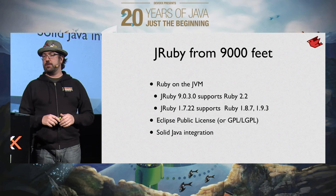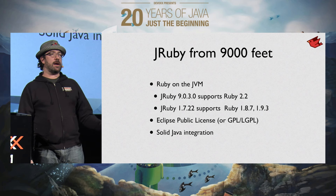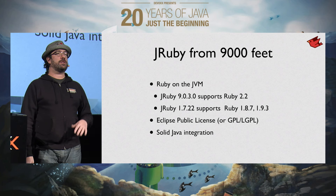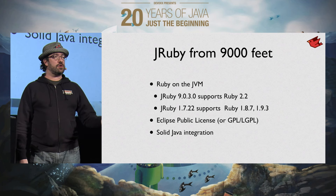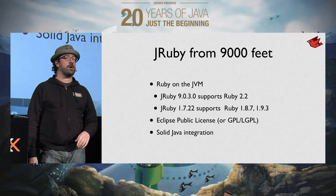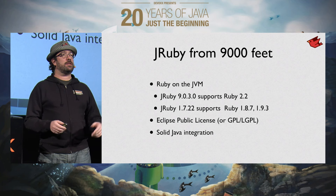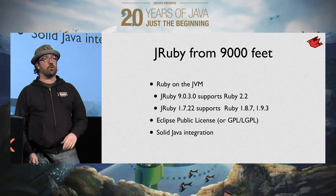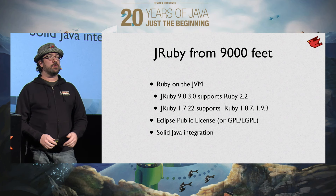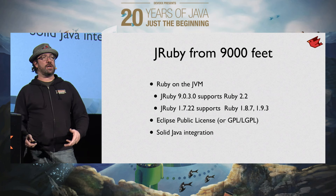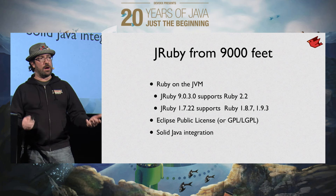JRuby from 9000 feet — it's Ruby on the JVM. The current version, JRuby 9.x, supports Ruby 2.2, which is the current version of Ruby. It's the first time we've been completely caught up on compatibility, so everything that runs on regular CRuby should work on JRuby as well. We do still support our 1.7 branch for older Ruby 1.8 and 1.9. We have a business-friendly Eclipse Public License, plus GPL and LGPL. The coolest thing about JRuby is that it integrates well with the Java platform — Java libraries, Java threads, Java GC, plus all the cool stuff the Ruby community has.